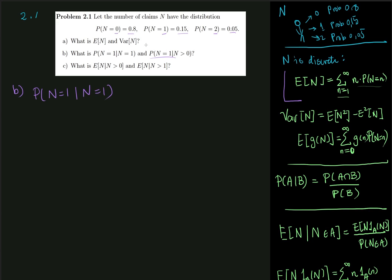So the probability that N is equal to 1, given that we know that N is equal to 1. Well, intuitively, if we know N is equal to 1, then what's the probability it's equal to 1? Well, then we are 100% sure. That's 100%.